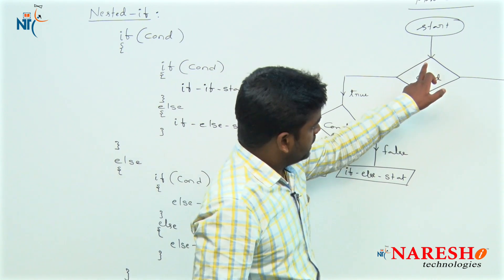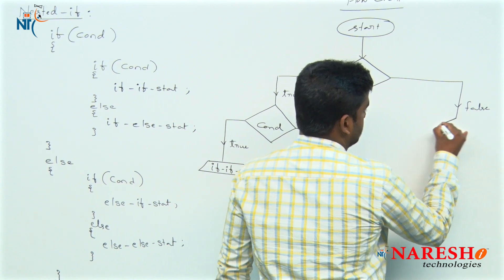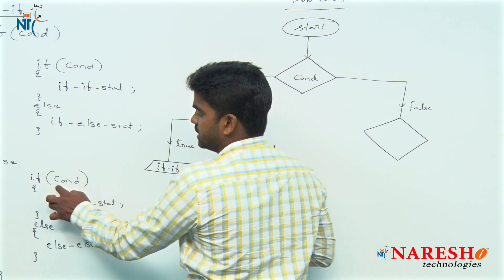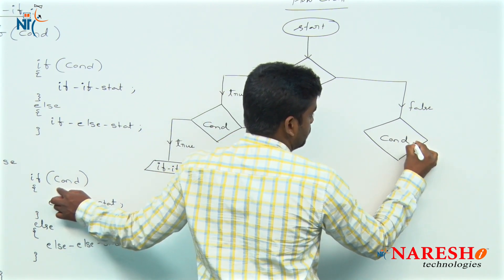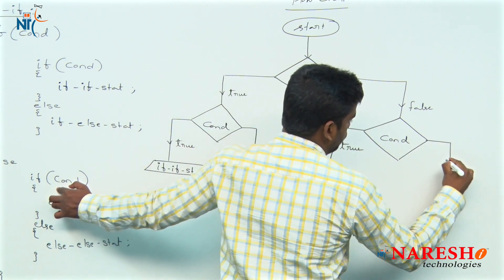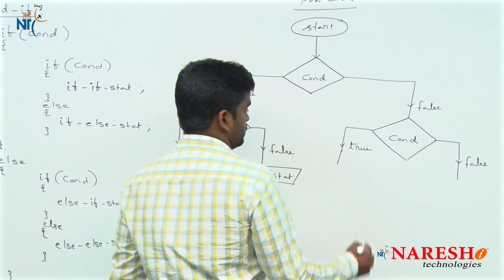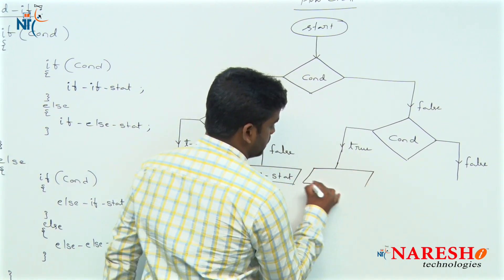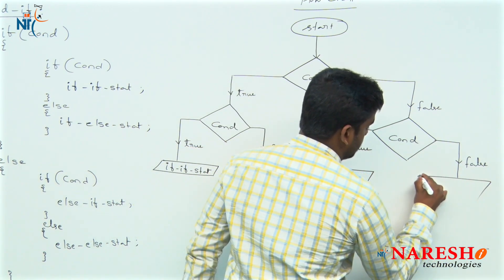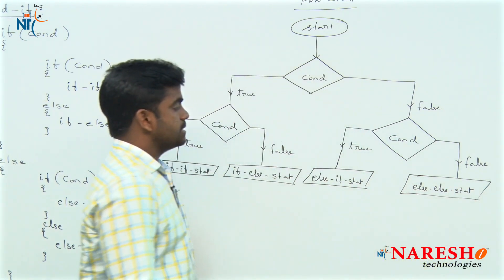When the outer condition fails, control directly enters into the else block and checks the inner if condition defined there. For this condition again two options are there — if true, the else-if statements execute; if false, the else-else statements execute. So any one of these blocks executes.